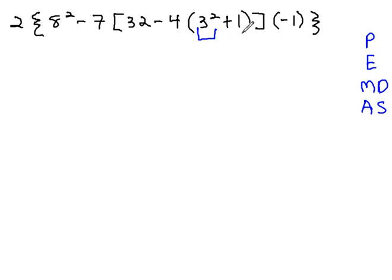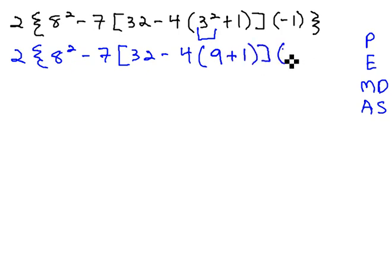So the only thing I'm going to do in this step is the 3 squared. So we now have 2 times 8 squared minus 7 times 32 minus 4 times, 3 squared is 9, plus 1, plus 1 square parentheses, times negative 1 squiggly parentheses.